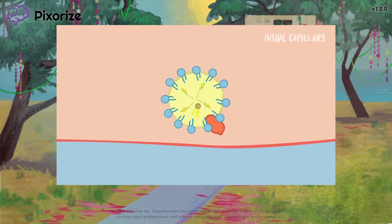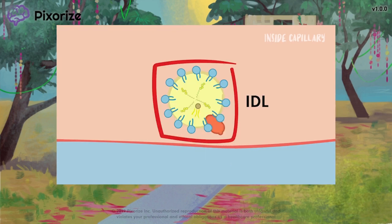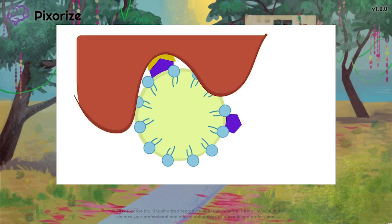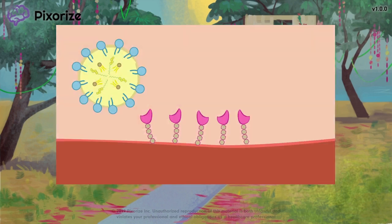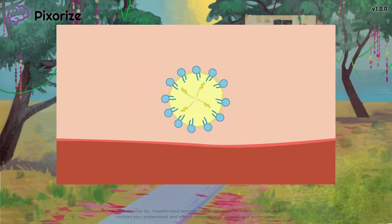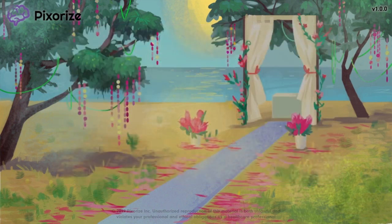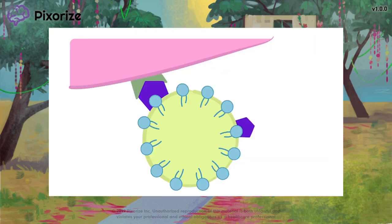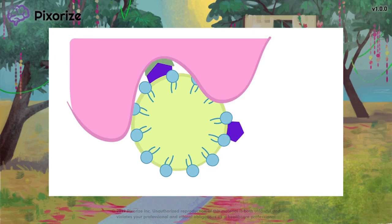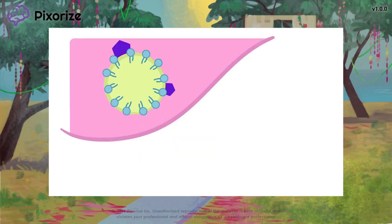The VLDL remnant that's left over is now known as IDL, which can be taken up by ApoE in the liver. Alternatively, IDL can be further metabolized by the enzyme hepatic lipase, which releases the remaining triglycerides, thereby forming LDL. Now that most of the triglycerides have been freed, the LDL particle is composed primarily of cholesterol. LDL's ApoB100 can then bind to LDL receptors, which facilitates endocytosis of the LDL particle and delivery of cholesterol to tissues.